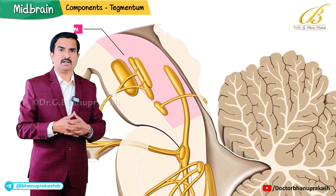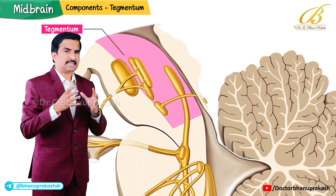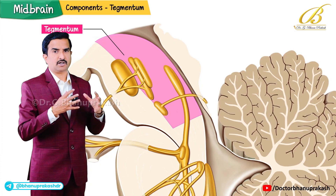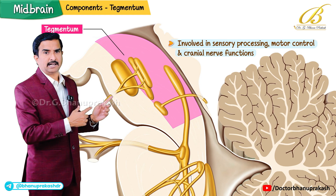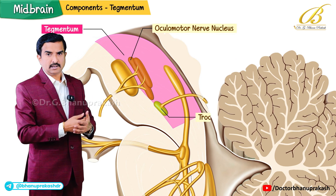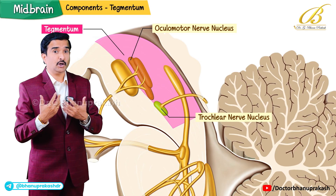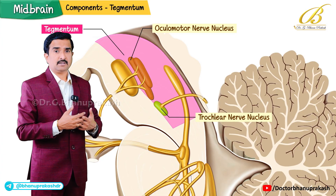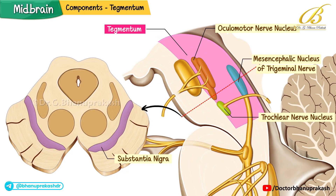The tegmentum houses several important structures involved in sensory processing, motor control, and cranial nerve function. These include the oculomotor nerve (cranial nerve III), the trochlear nerve (cranial nerve IV), the mesencephalic nucleus of the trigeminal nerve (cranial nerve V), the substantia nigra, and the red nucleus.